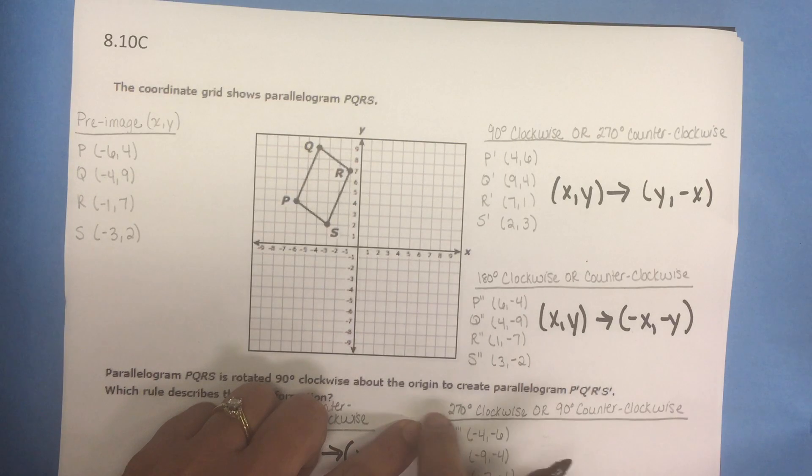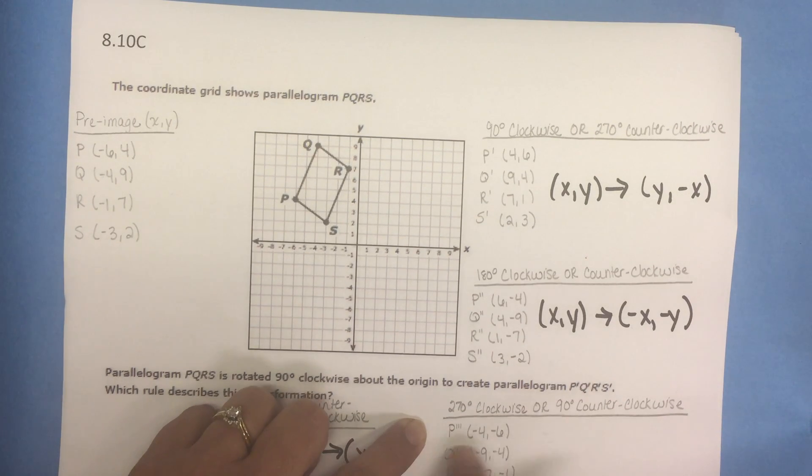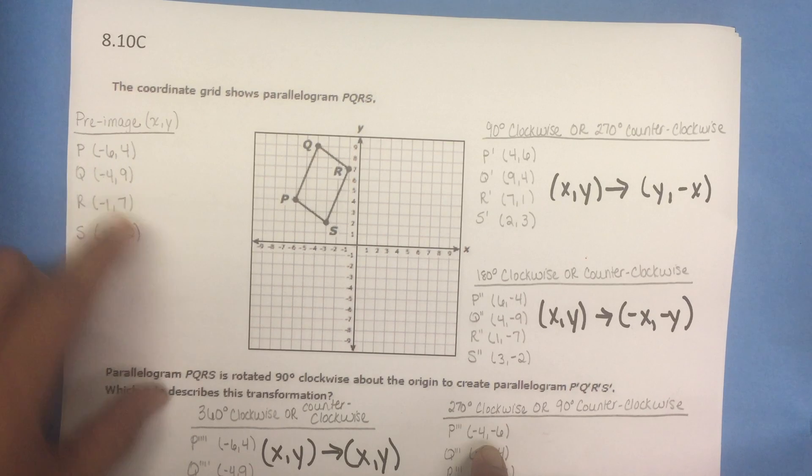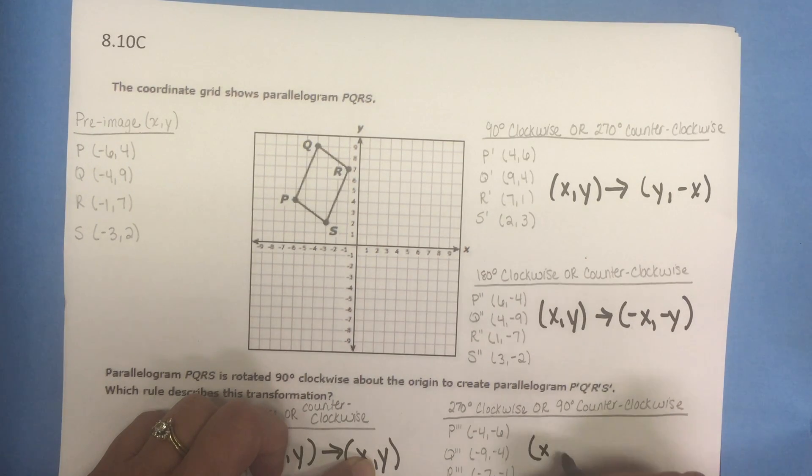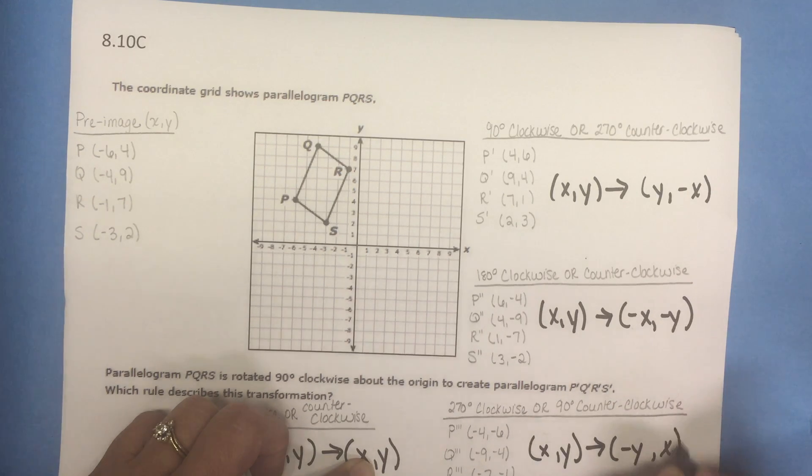Now the 270 clockwise rotation, let's look at those coordinates and see if we can come up with a pattern. The rotated figure has coordinates of (-y, x).